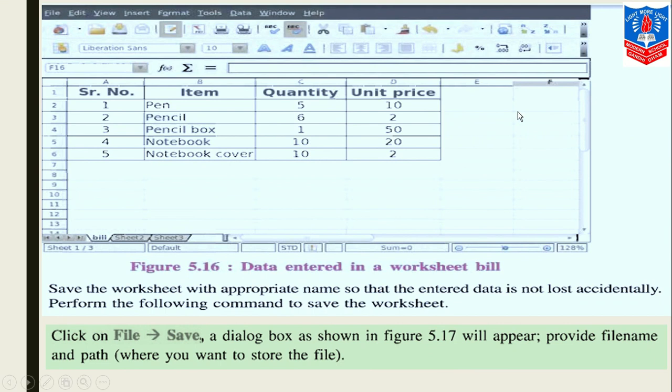Now in this image you can see we have created our detailed data entered in worksheet 'bill'. Save the worksheet with an appropriate name so that entered data is not lost accidentally. So for saving, we can go to the File menu and Save. A dialog box will appear, and we will provide the path plus file name.